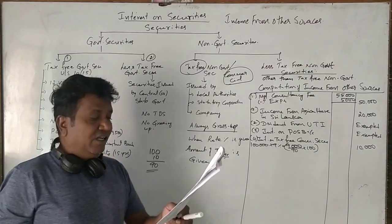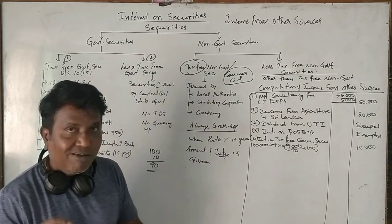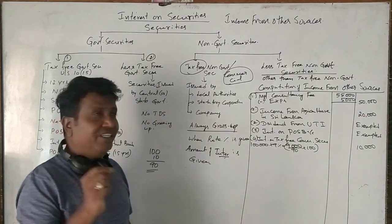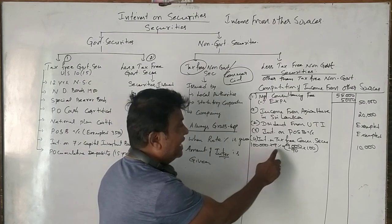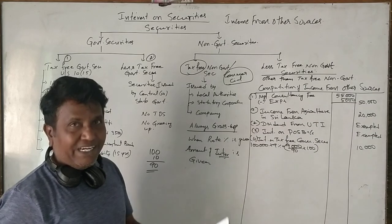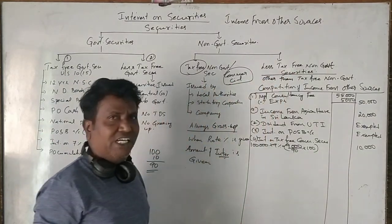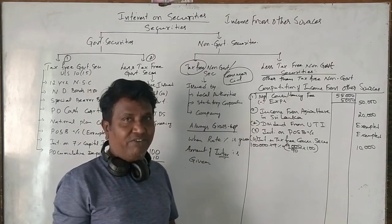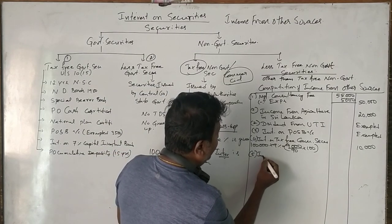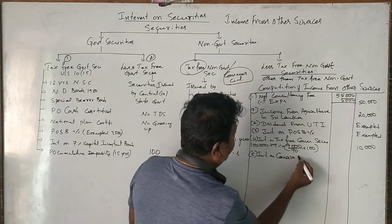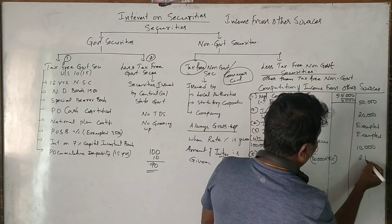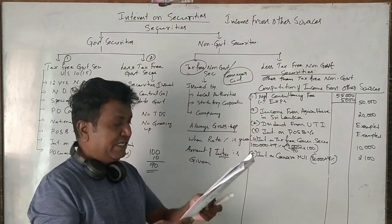The second security is 30,000 of 7% debentures of Canara Mills Limited. Canara Mills is a non-government company and the word 'tax-free' is not mentioned. Since it is not tax-free, we do not need to gross up. We directly calculate the interest: on 30,000 at 7%, the interest is 2,100 rupees, which is directly taxable.